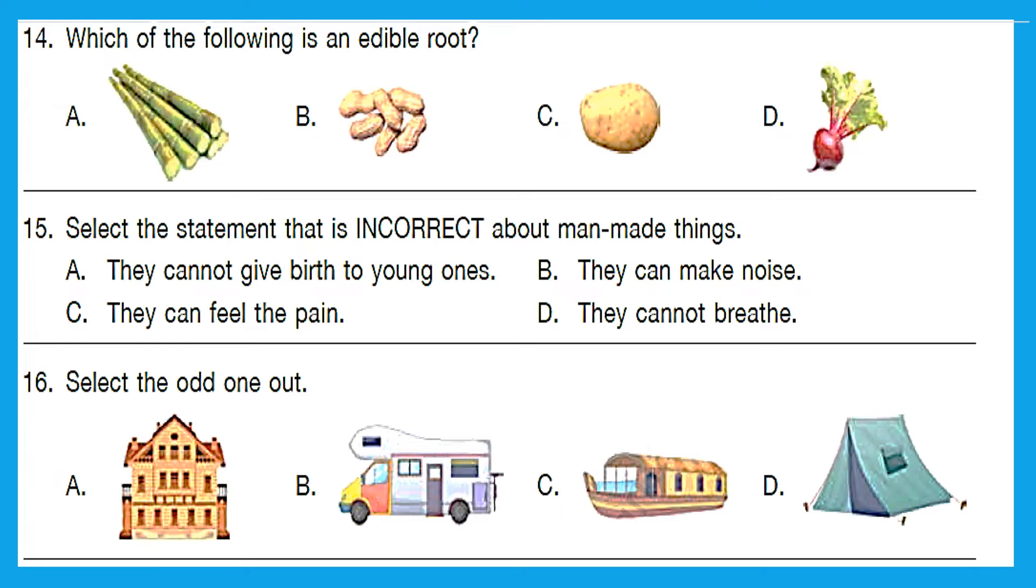Question 14. Which of the following is an edible root? Now here we have sugarcane as option A, then we have potato as option C and these both are edible stems. And option B is groundnut, it is an edible seed. Whereas D is beetroot and it is an edible root. So option D is the right answer for us.